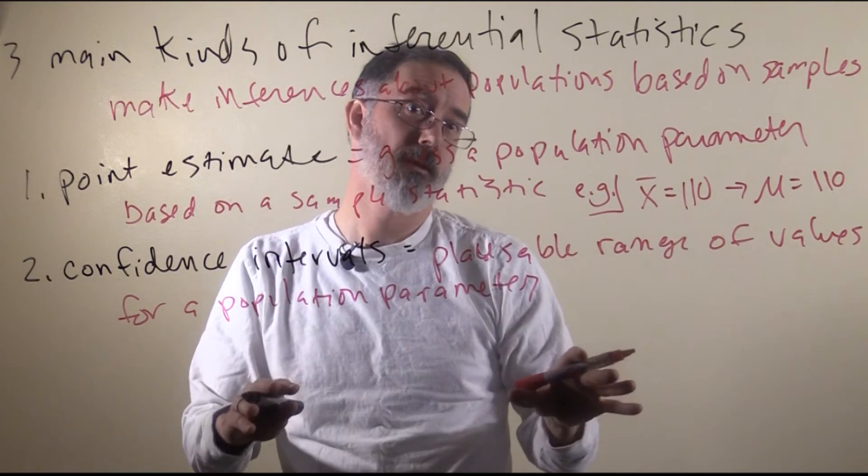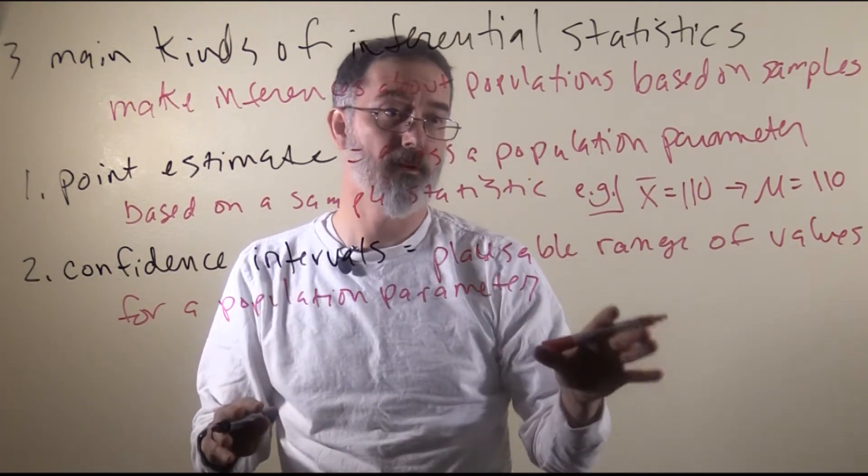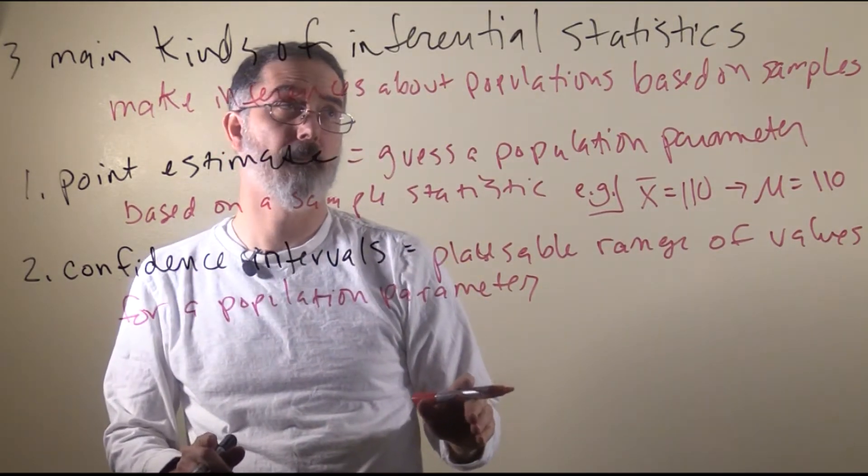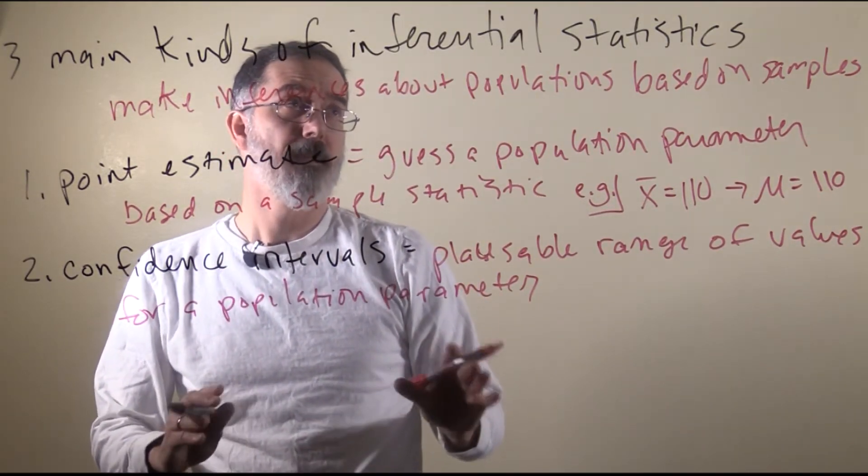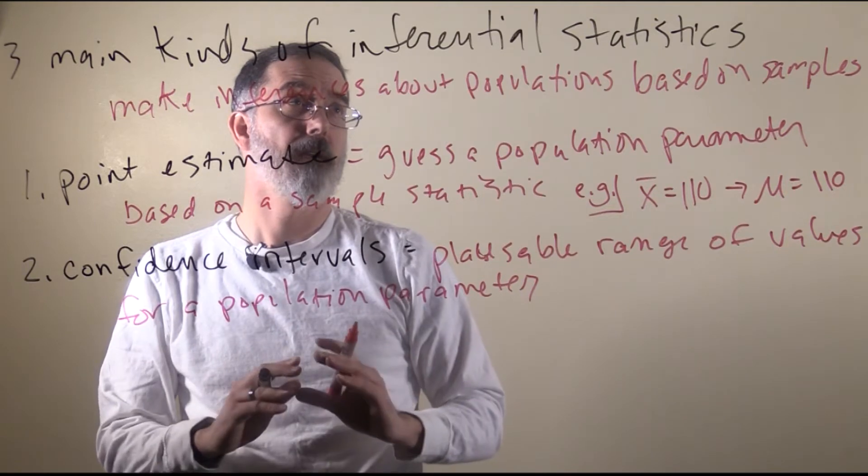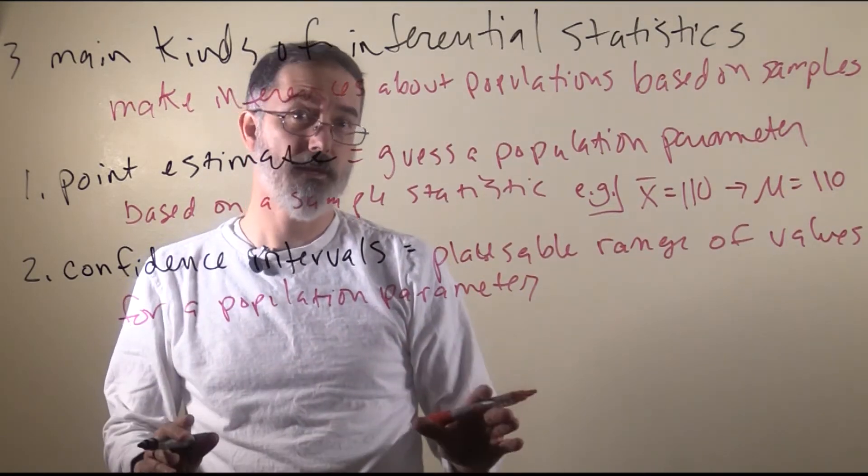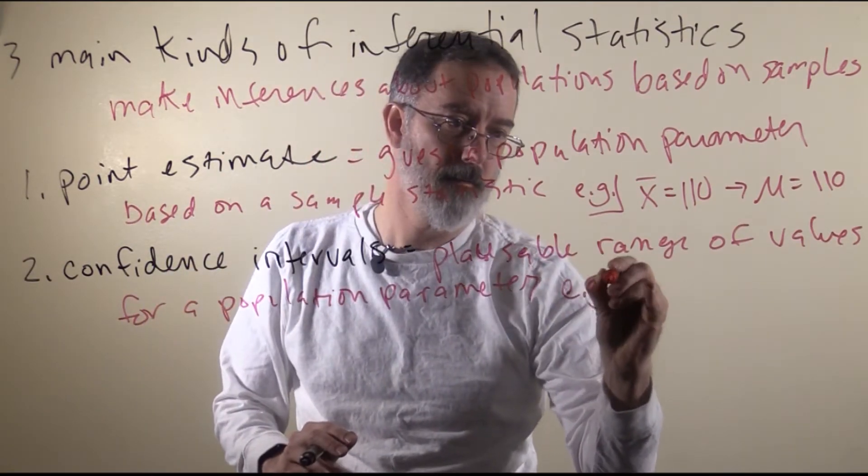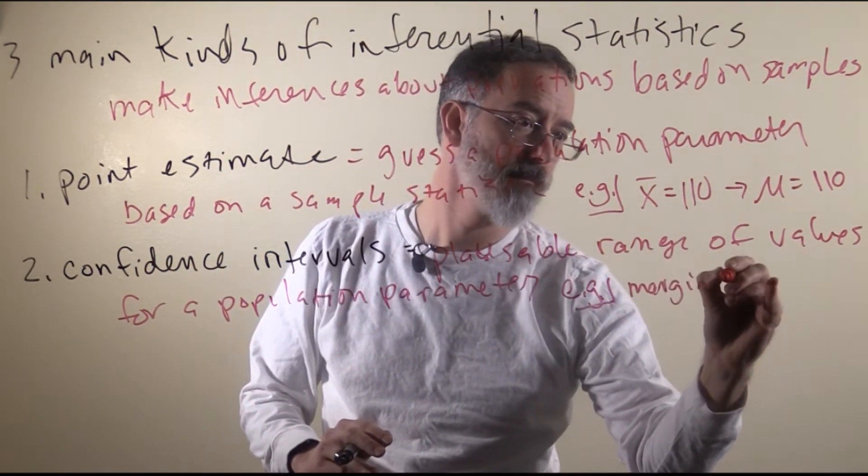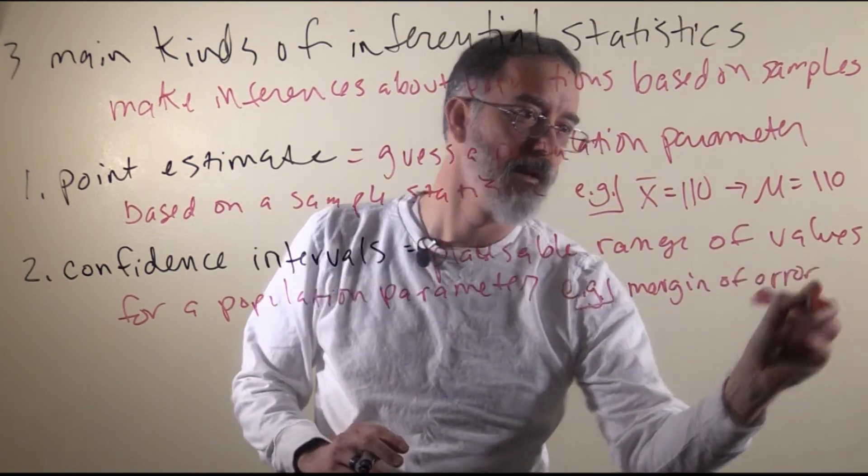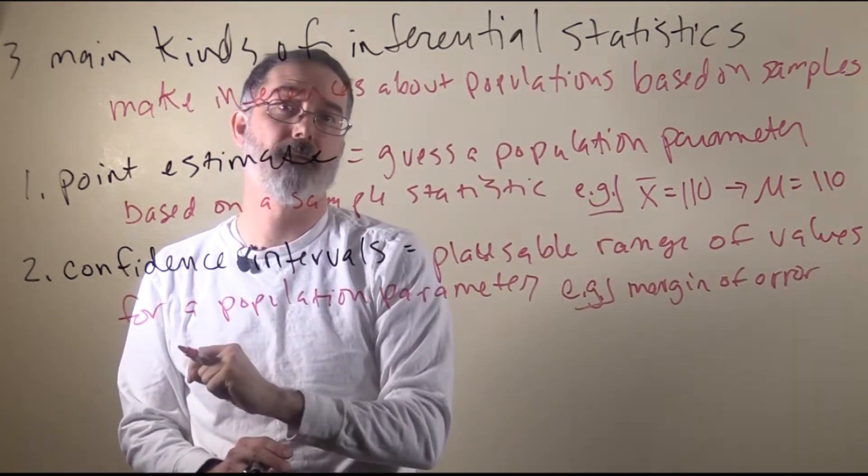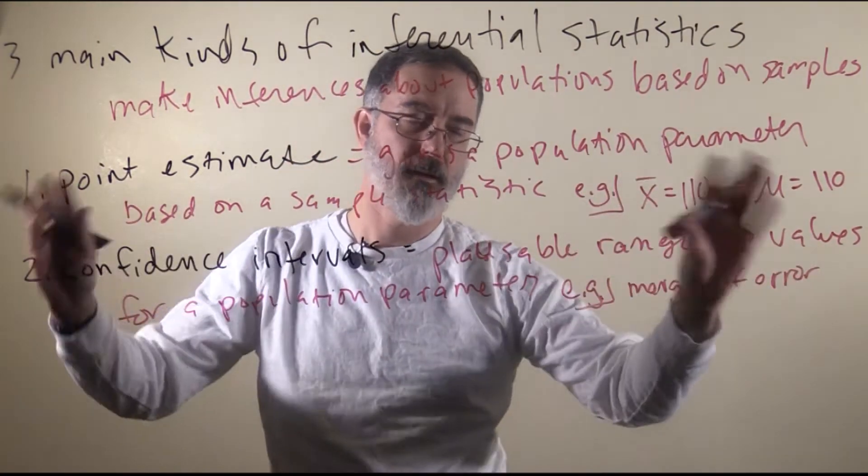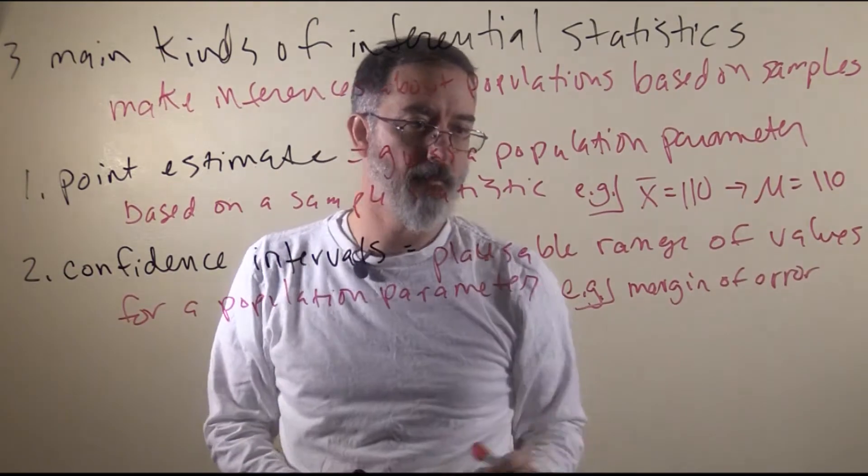With some probability statistics that we will talk about pretty soon in this class. But these are something that you often see when it is time for presidential elections, where they will say a margin of error in the polling. And a margin of error is a confidence interval, so plus or minus five percentage points for President Trump. That would be a margin of error.